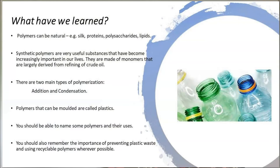So what have we learned? Polymers can be natural — for example, silk, proteins, polysaccharides and lipids. Synthetic polymers are very useful substances that have become increasingly important to us. They are made of monomers largely derived from the refining of crude oil. There are two main types of polymerisation: addition and condensation. Polymers that can be moulded are called plastics. You should be able to name some polymers and their uses, and remember the importance of preventing plastic waste and using recyclable polymers wherever possible. Thank you for listening and watching. Please check the project portal for more resources on our plastic world.